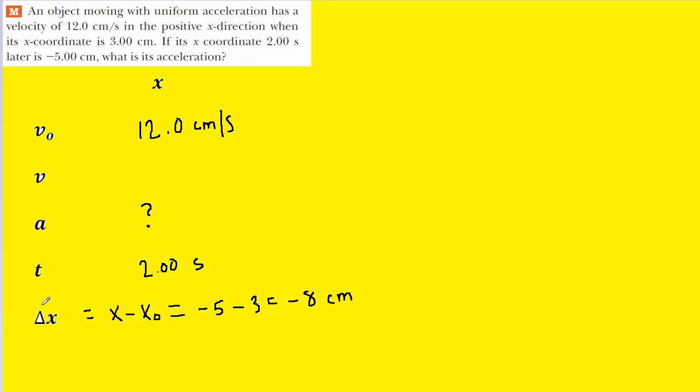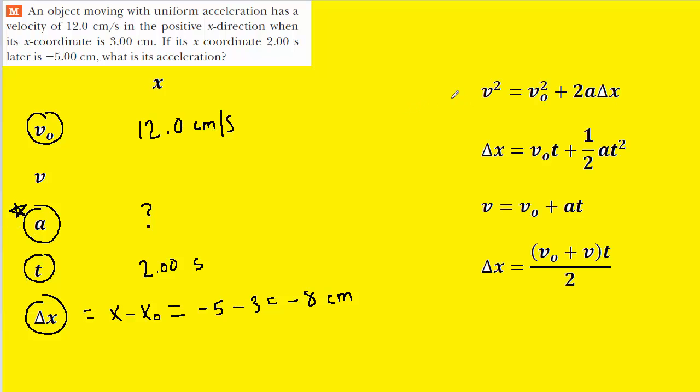The next step is to pick an equation from kinematics that includes our knowns as well as what we're looking for. So let's take a look at those equations. And if you study those equations for long enough, you should be able to pick the one that contains the four parameters that we circled on this side. And so this equation here turns out to be the winner.